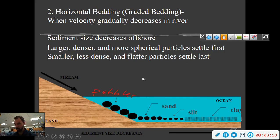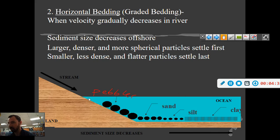Rivers also carry sediment. Another type of graded bedding is horizontal bedding. This happens when river velocity decreases as it enters a larger body of water like the ocean or a lake. Sediment size decreases offshore. Larger, denser, more spherical particles settle first. Smaller, less dense, flatter particles continue on until they're finally dropped. So: pebbles, sand, silt, clay, in order. Sediment size decreases as you go further offshore. Sometimes they'll show this from a map view, sometimes from a side view.